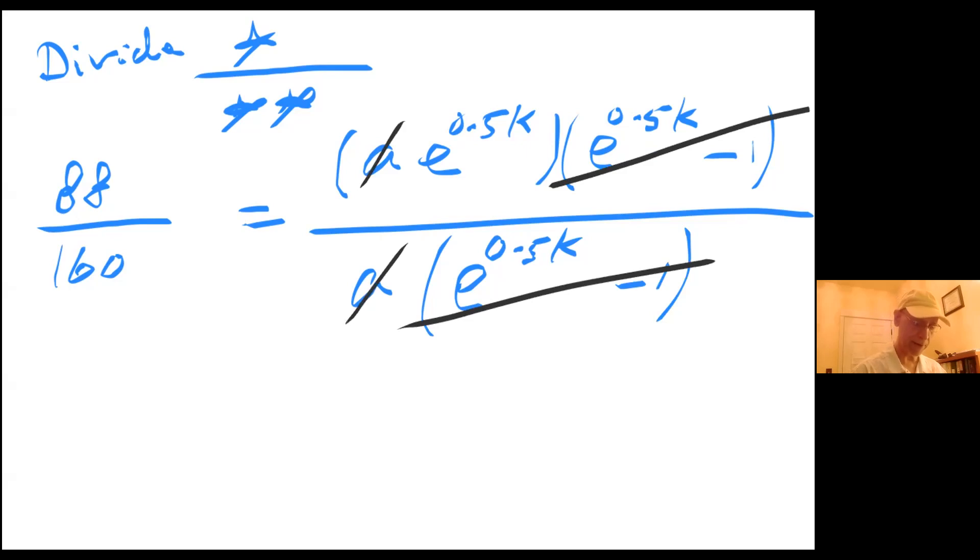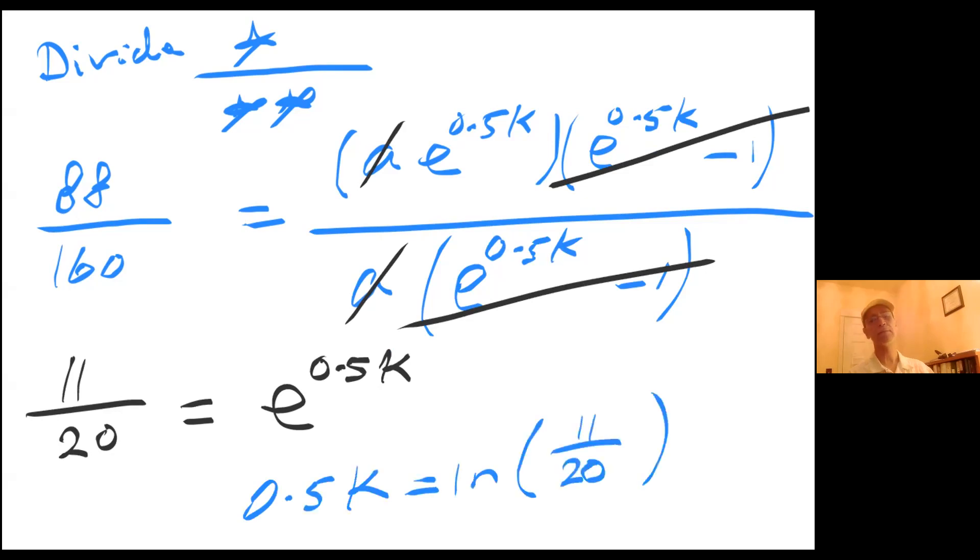And left hand side, 88 over 160, divide that by 8, I get 11 over 20. That equals e^(0.5k). And if I take natural log of both sides, then I would get 0.5k equals natural log of 11 over 20.